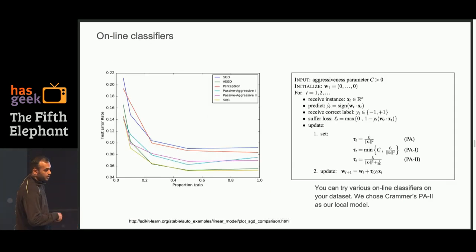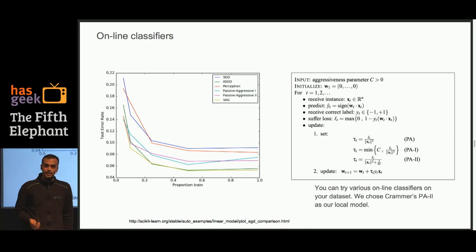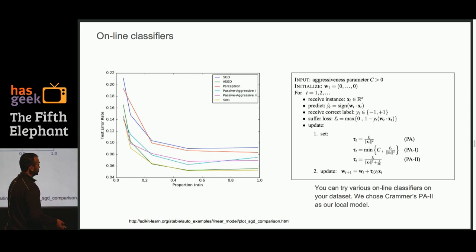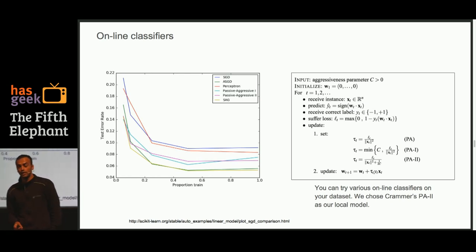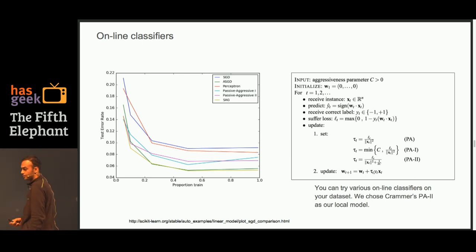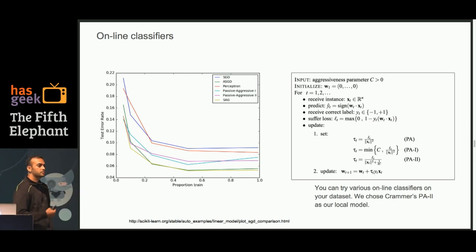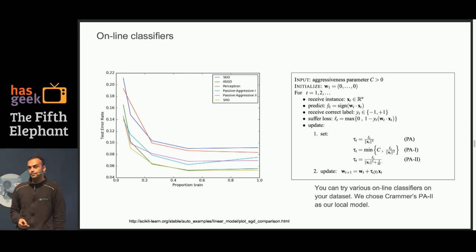There are various online models available; you can put them to a test using a nice scikit-learn script run against your dataset to see what immediately performs best. We chose Crammer's Passive-Aggressive Variant 2 model, which gives us much more control on the aggressiveness parameters and fine-tuning. It works with losses and can do not only classification but also regression and ranking.